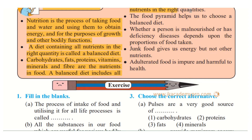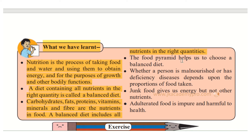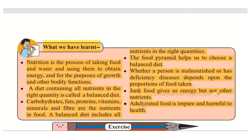A balanced diet includes nutrients in the right quantity. The food pyramid helps us to choose a balanced diet — drawing your food pyramid helps you see whether you are consuming a balanced diet. Whether a person is malnourished or has deficiency diseases depends on the proportion of food they are taking. Junk food gives us energy but not other nutrients, so we should avoid it — occasionally is okay but not on a regular basis. Adulterated food is impure and harmful to health.